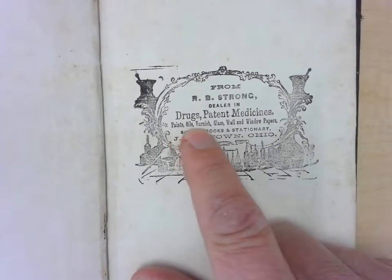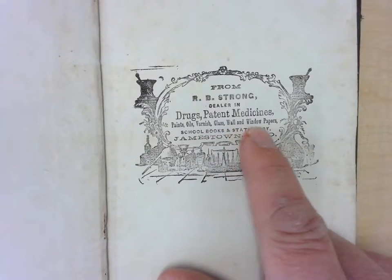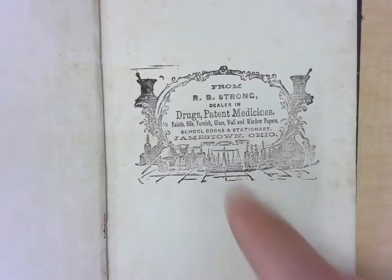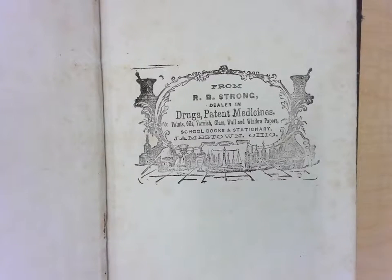paints, oils, varnish, glass, wall and window papers, school books and stationery, Jamestown, Ohio. Jamestown, Ohio is north of Hillsborough. You go up Ohio 72 and it's right there. You go through Jamestown, Ohio.